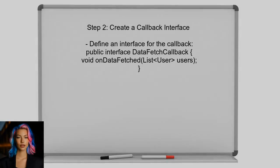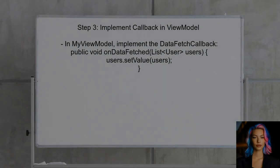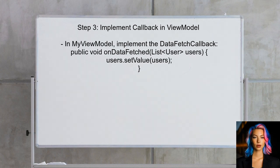Next, use a method to update the mutable live data in the view model from the service. This can be achieved by creating a callback interface that the service can use to communicate back to the view model. Then, implement this callback in the view model. When the service fetches the data, it will call this method to update the mutable live data.